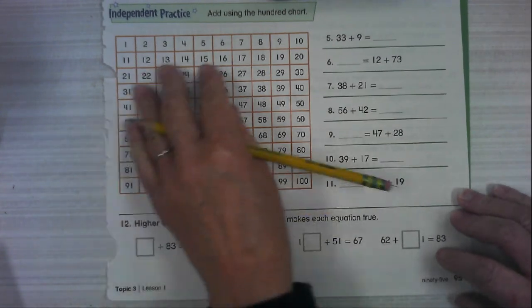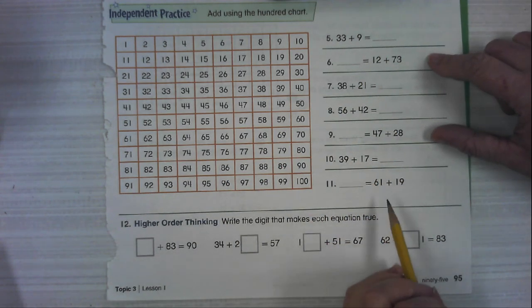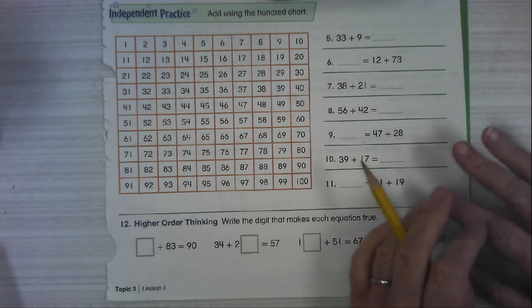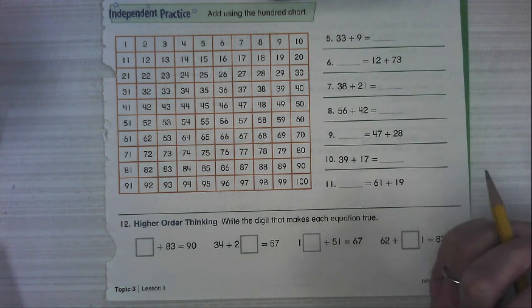So here, you've gotten a big hundreds chart, the whole thing, and you have these equations. Again, with 6 and 9 and 11, this is okay. You don't have to change the order. The answer can go on this side too. That's fine.